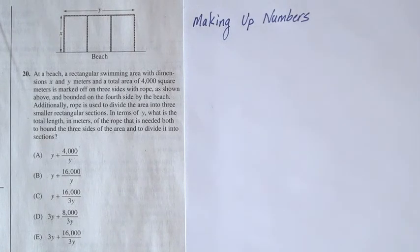Question 20 reads: At a beach, a rectangular swimming area with dimensions x and y meters and a total area of 4,000 square meters is marked off on three sides with rope, as shown below,